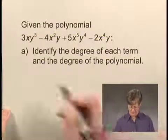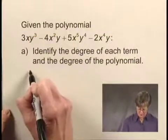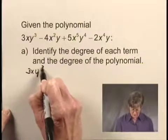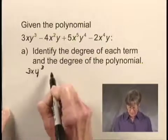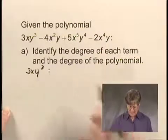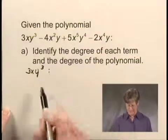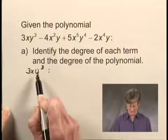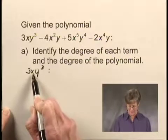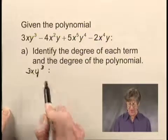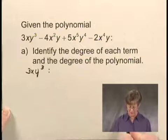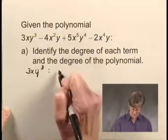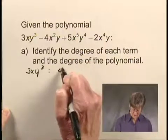So let's just take the terms in order. The first term is 3xy cubed, and the degree of that term is the sum of the exponents on the variables. So x is to the first power and y is to the third power, so the degree is 1 plus 3, or 4.